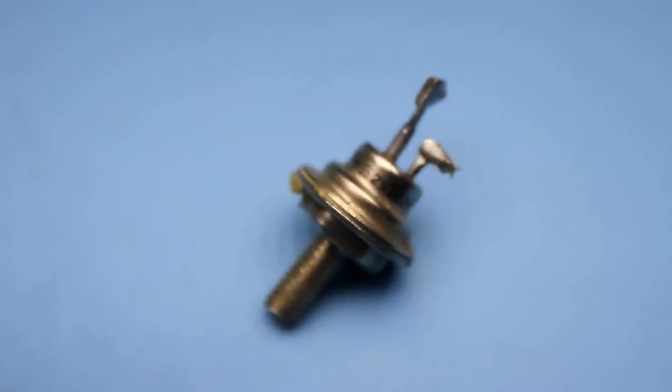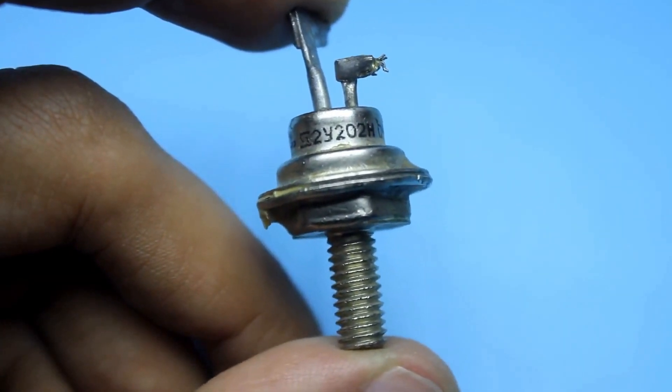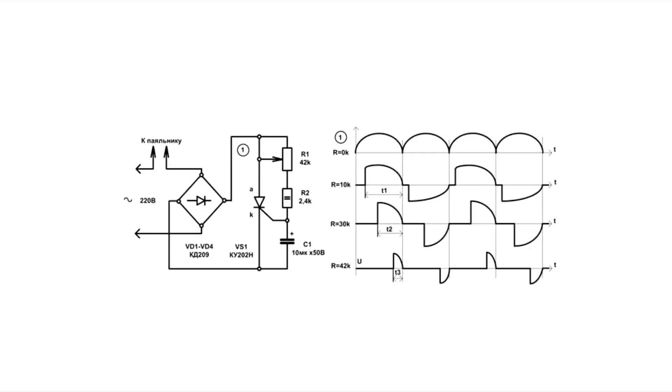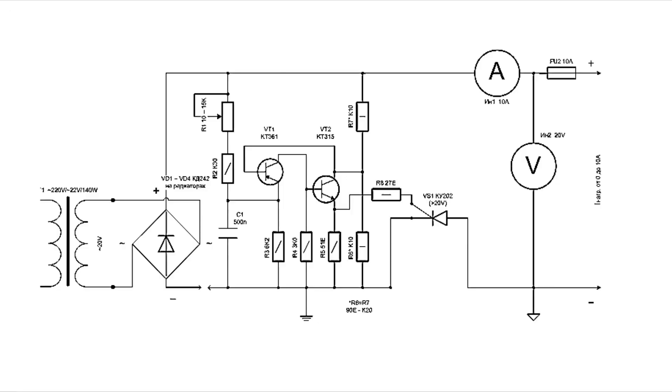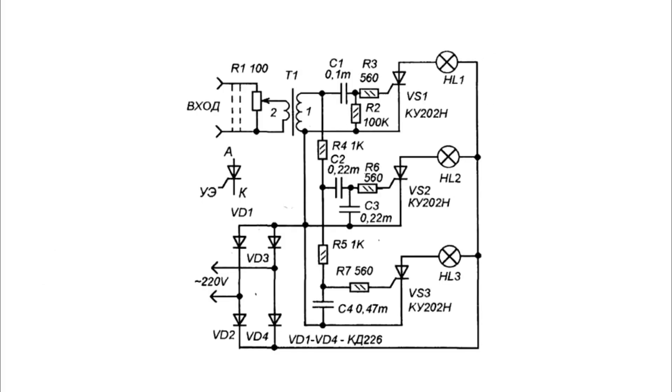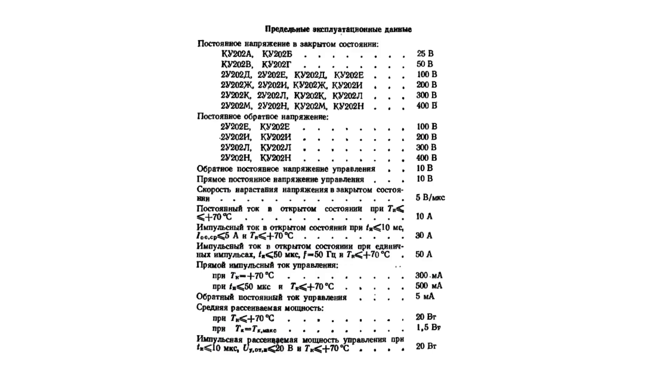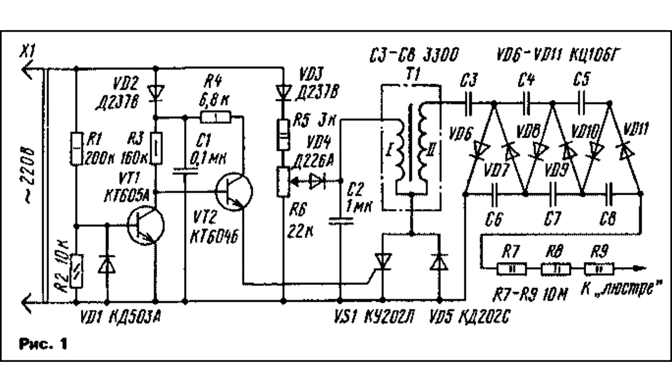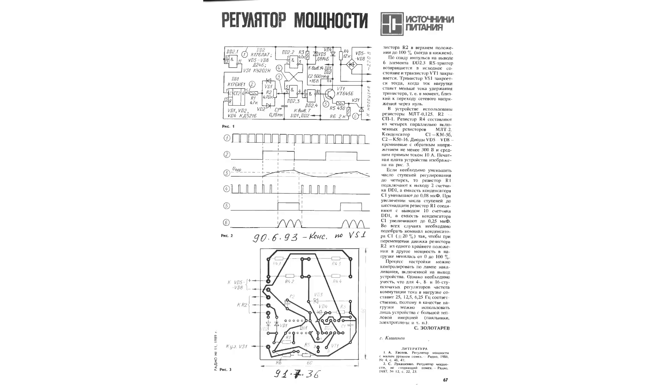In front of you now is the most popular Soviet thyristor, the KU202, which has excellent parameters and is still in demand today. Phase impulse power regulators or dimmers are built based on it. It is often used as a power element in homemade chargers, various light music circuits, and so on. The maximum switching current reaches up to 10 amps. The reverse voltage, depending on the index, ranges from 25 to 400 volts. Based on these thyristors, hobbyists have constructed many things. Articles about DIY projects using such a thyristor often appeared in the pages of the magazine Radio.